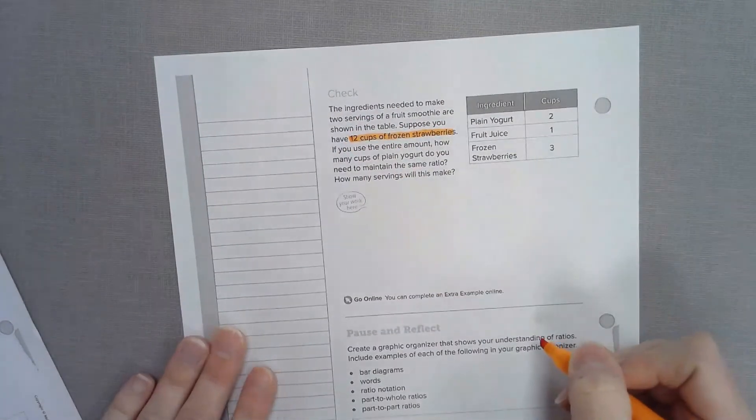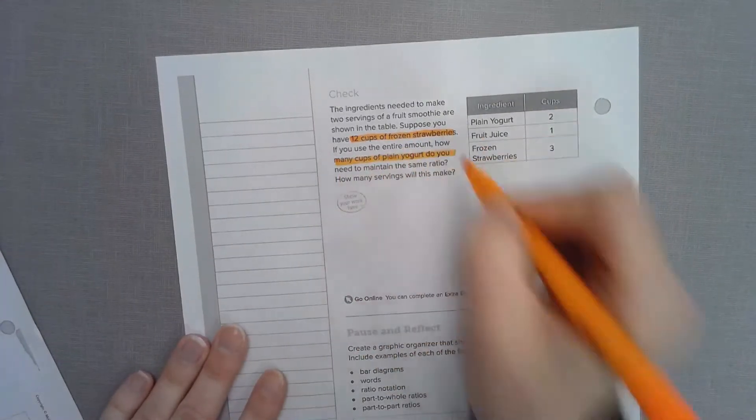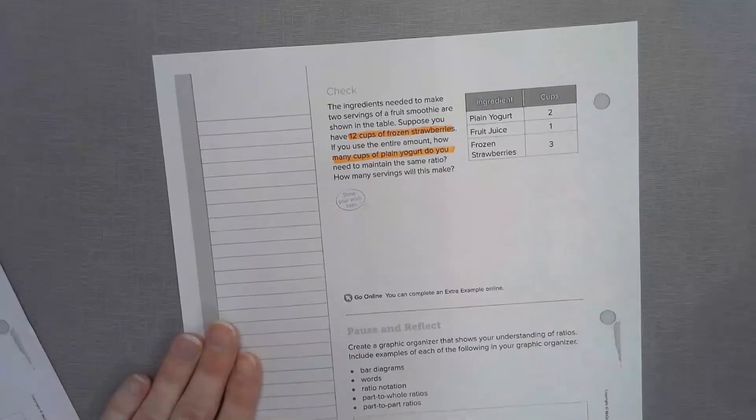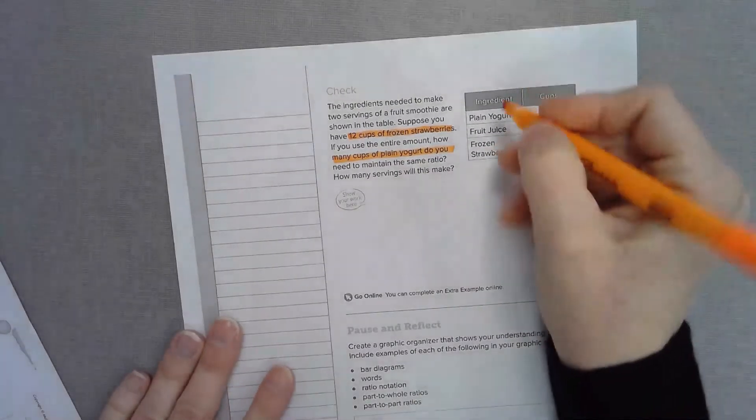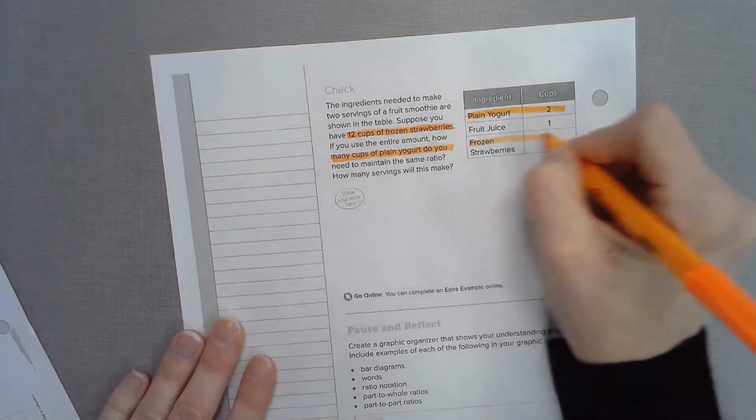If you use the entire amount, how many cups of plain yogurt do you need to maintain the same ratio? Let's look over here. We would need 2 cups of plain yogurt for every 3 cups of strawberries.